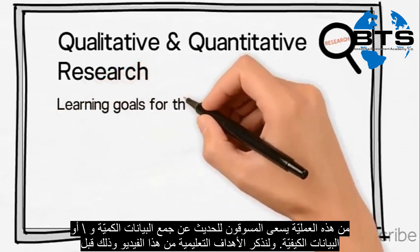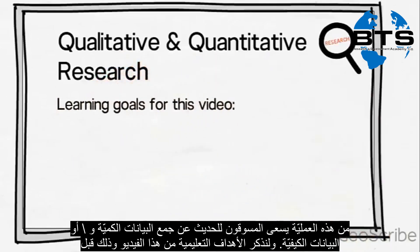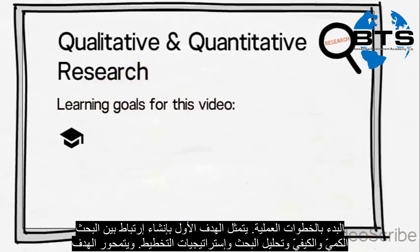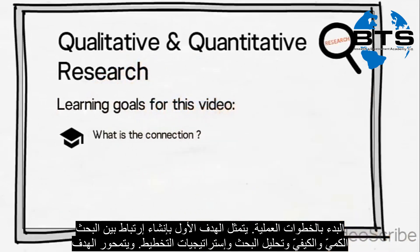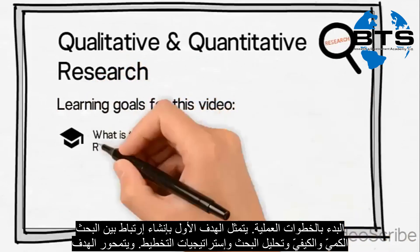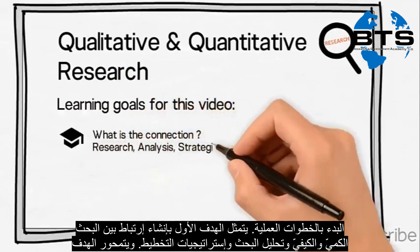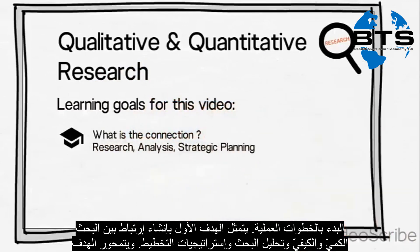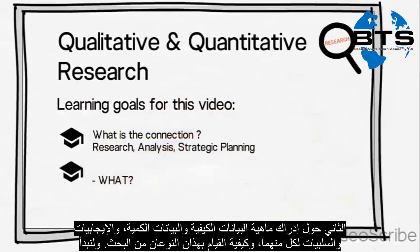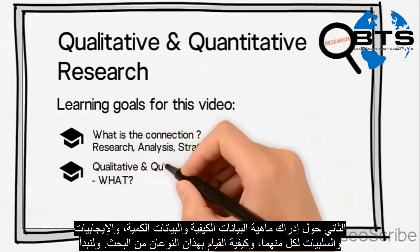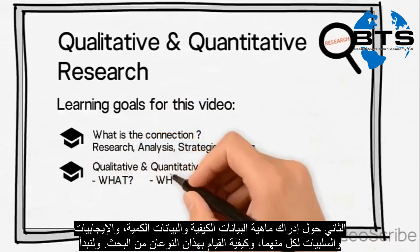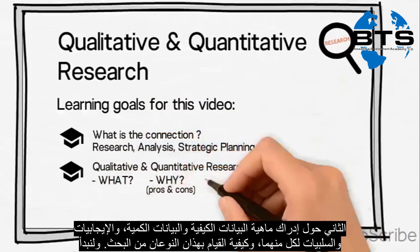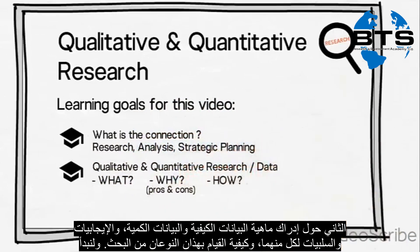Before we start, let us list the learning goals for this video. Firstly, the goal is to establish a connection between qualitative and quantitative research and the rest of the research analysis and strategic planning process. Secondly, the goal is to gain an understanding of what qualitative and quantitative data is, the pros and cons of each, and how we can conduct these two types of research.